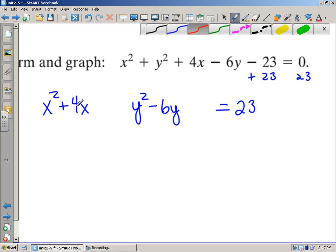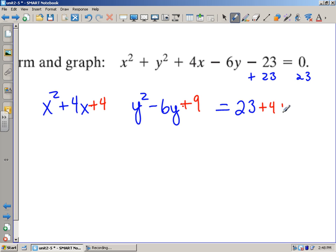My negative 23 is now positive 23 when it's on the other side of the equal sign. Now I've got to complete the square here. I'm going to take 4, take it in half, that's 2. 2 squared is 4. Then I'm going to take this guy right here, negative 6. Half of that's negative 3. Negative 3 squared is 9. So I added 4 and I added 9 on this side. Let me add it on the other side.